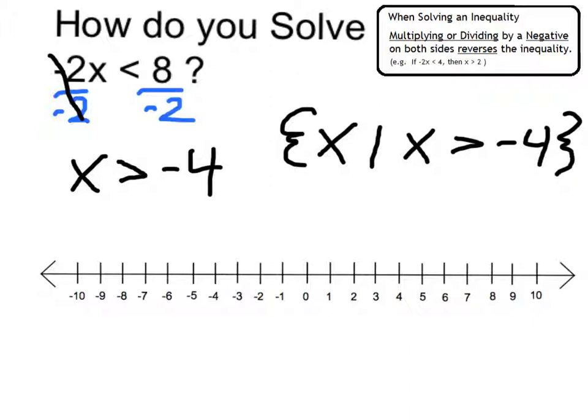To express this on the number line, I put an open circle around negative 4, indicating that it itself is not a potential solution. And I'm going to draw my line to the right, indicating anything greater than negative 4 is a potential solution.